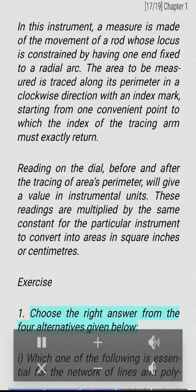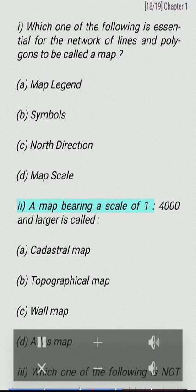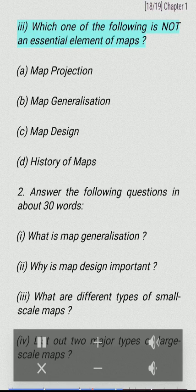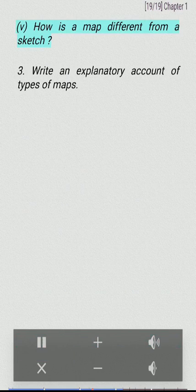Exercise. 1. Choose the right answer from the four alternatives given below. I. Which one of the following is essential for the network of lines and polygons to be called a map? A. Map legend, B. Symbols, C. North direction, D. Map scale. II. A map bearing a scale of 1:4,000 and larger is called: A. A cadastral map, B. Topographical map, C. Wall map, D. Atlas map. III. Which one of the following is not an essential element of maps? A. Map projection, B. Map generalization, C. Map design, D. History of maps. 2. Answer the following questions in about 30 words: I. What is map generalization? II. Why is map design important? III. What are different types of small scale maps? IV. List out two major types of large scale maps. V. How is a map different from a sketch?